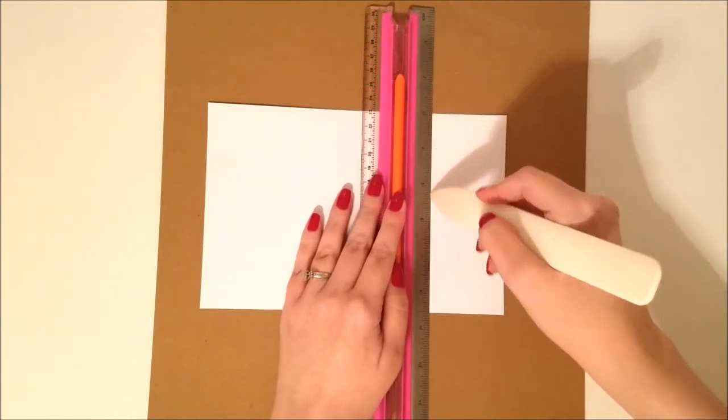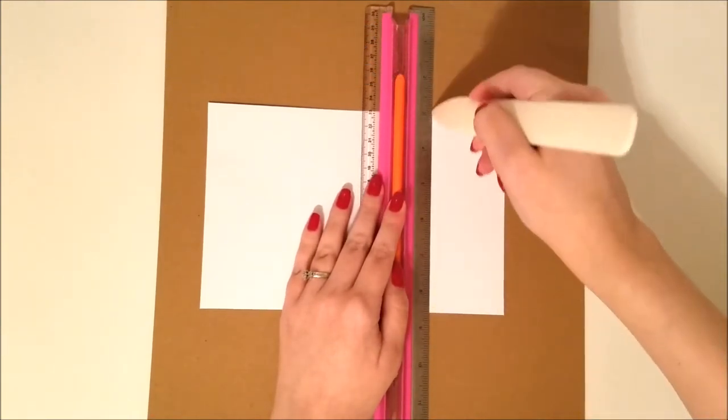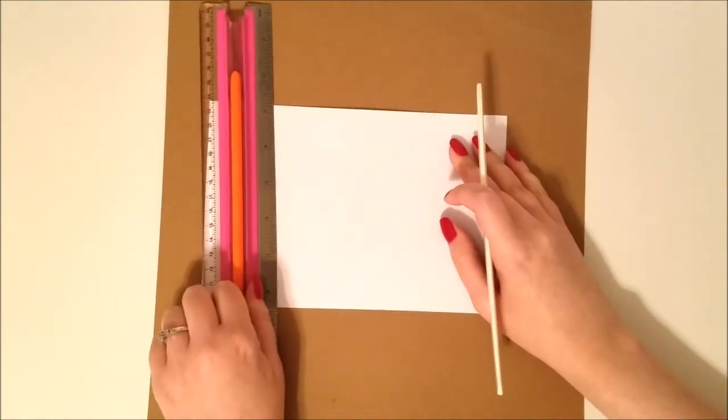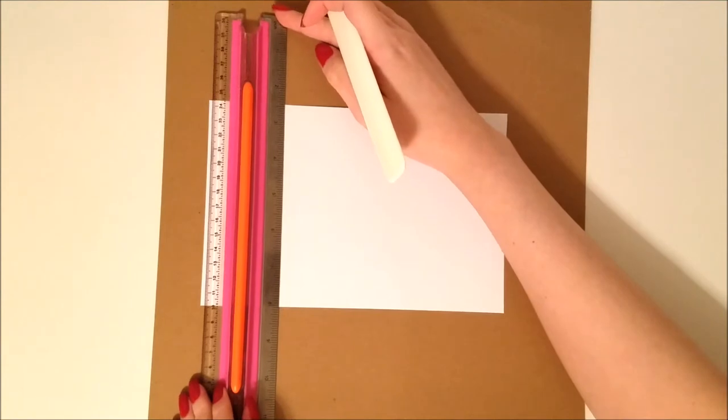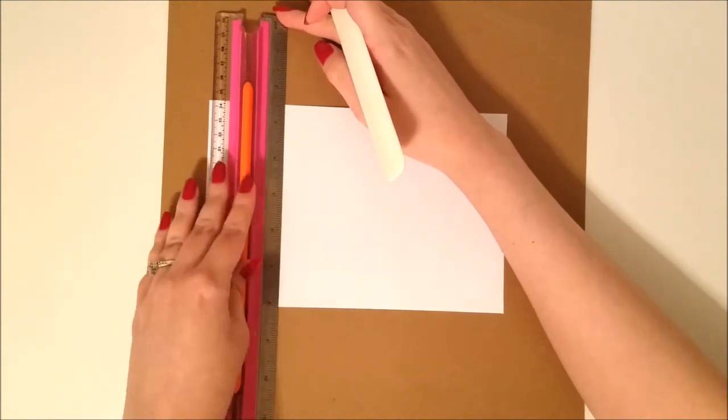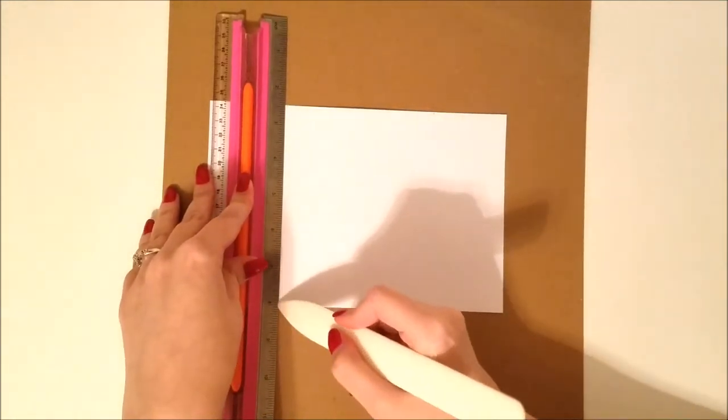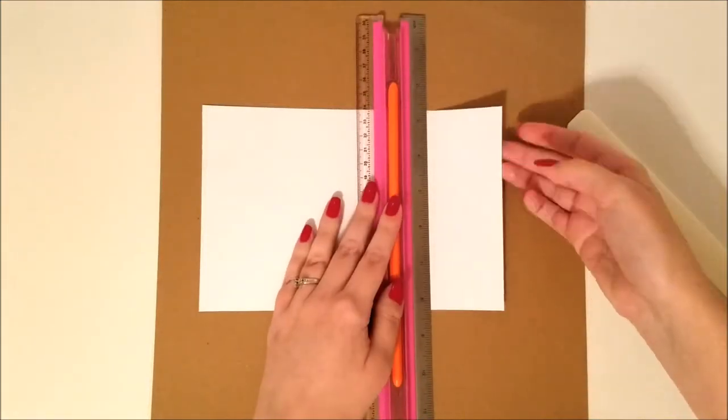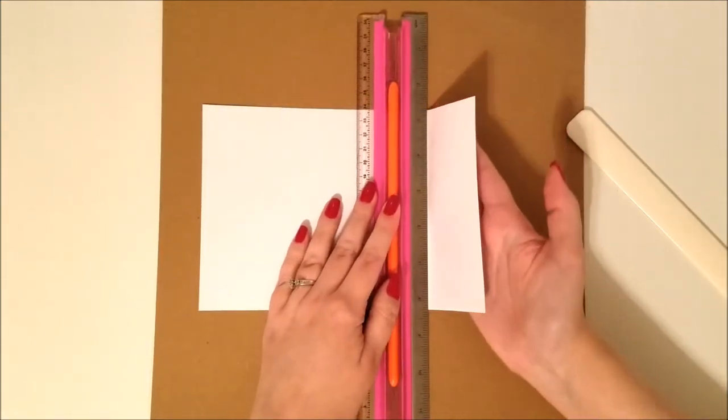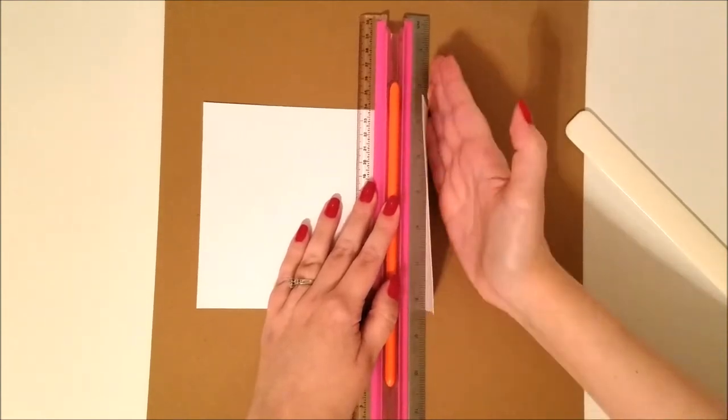So if you measure in 2 and 1/8 inch and just place your ruler right there, you can just use the tip of your bone folder or a sharp pointed object and go ahead and make a score line right there. I did want to show you if you don't have a scoreboard, you can do score lines with a ruler just like this.